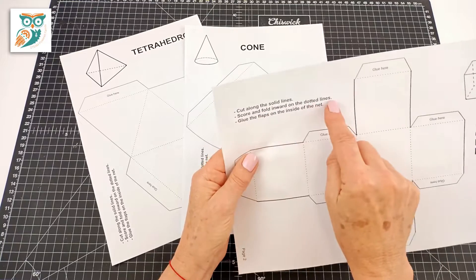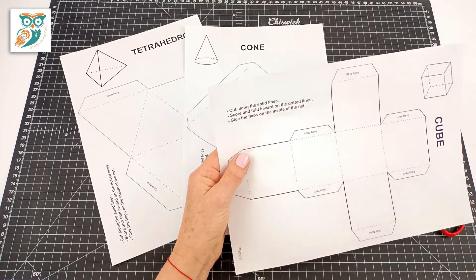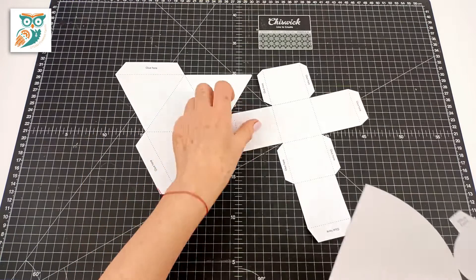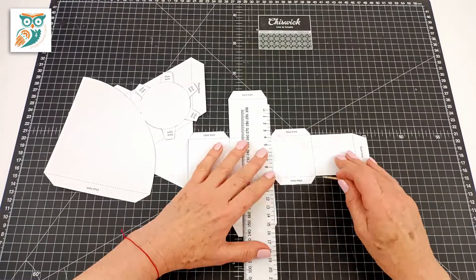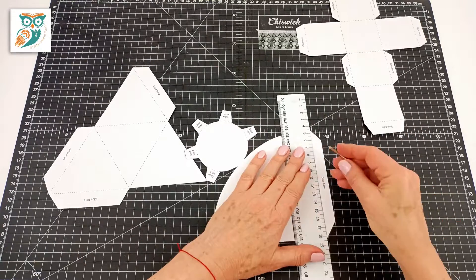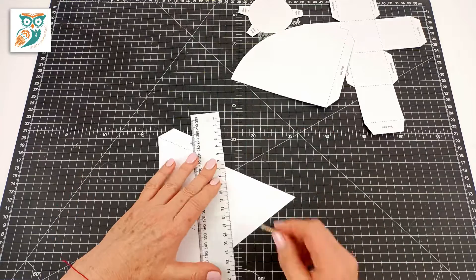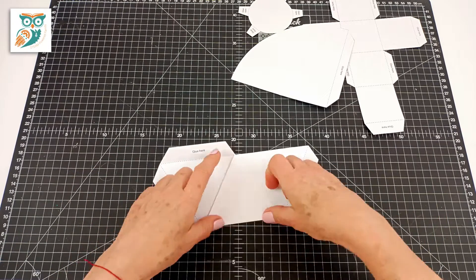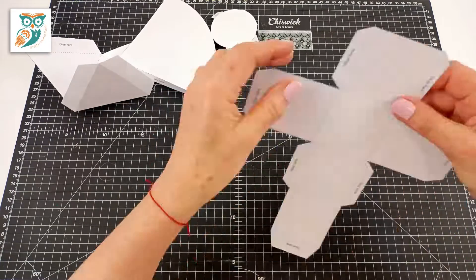We're going to cut out the different shapes and then we're going to score along the dotted lines because it helps to make a more crisp edge on our shapes and those crisp edges really can make a difference in how nice your finished products look. You don't actually have to do this step if you don't feel that your kids are ready for it but it's a fun little thing for your kids to do just gently scoring those dotted lines. Then we're going to fold in all of the pieces, all of those little edges on each of our shapes.